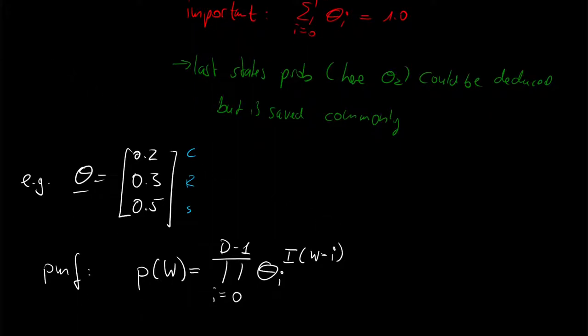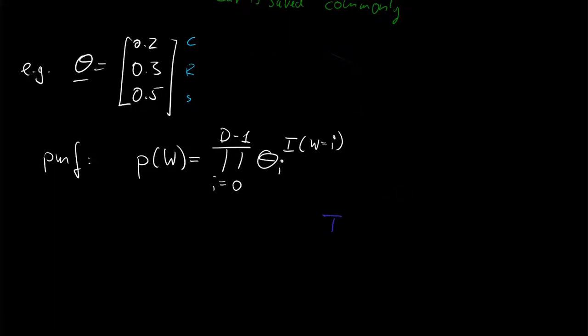And this indicator function is defined as follows. So indicator of, let's say, w equals i is 1 if w is i, and it is 0 else. So what you would probably expect from an indicator.